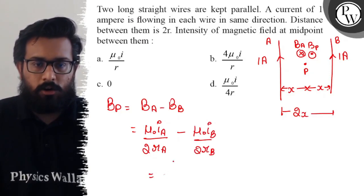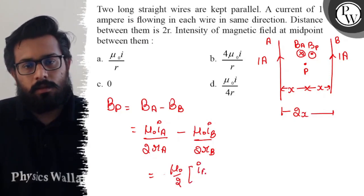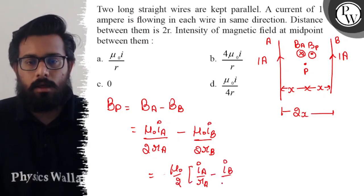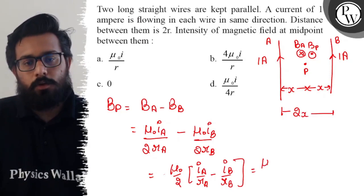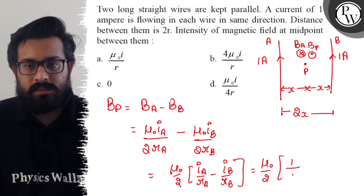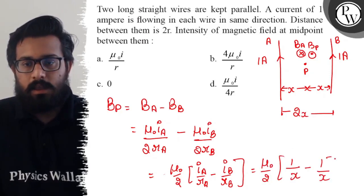You take out μ₀ by 2π as common. You will get i_A upon r_A minus i_B upon r_B. So μ₀ by 2π, i_A is 1 ampere, r_A is x, minus i_B is 1 ampere, r_B is x.